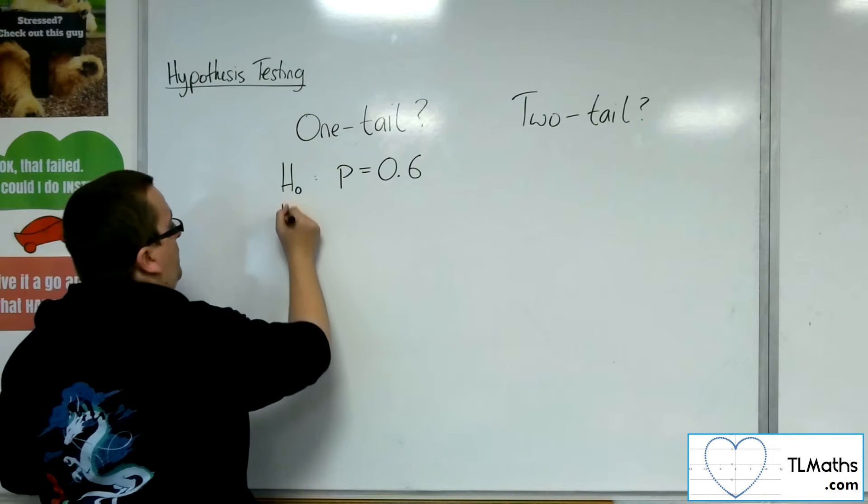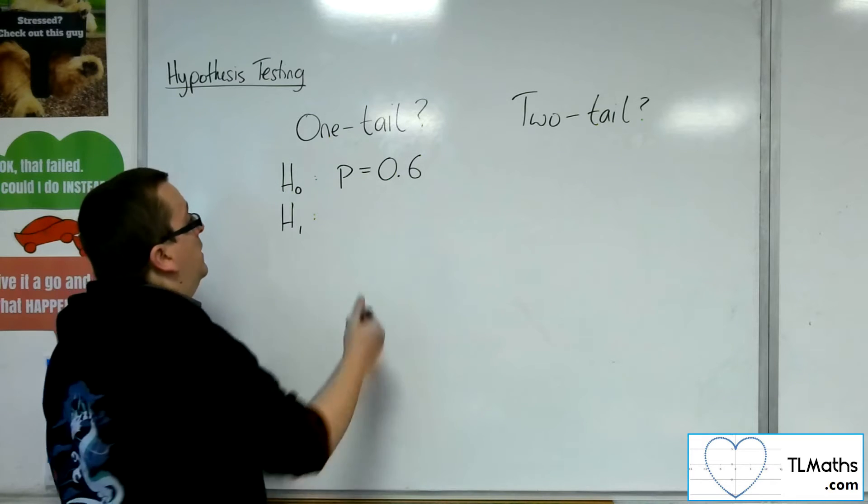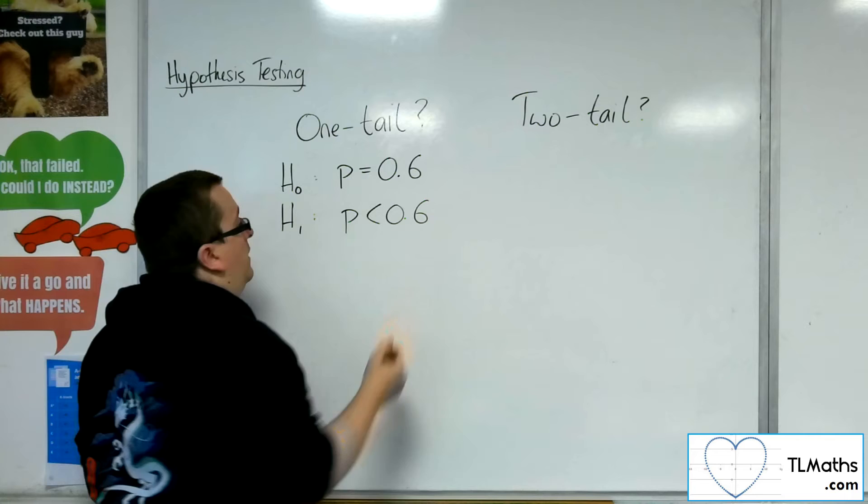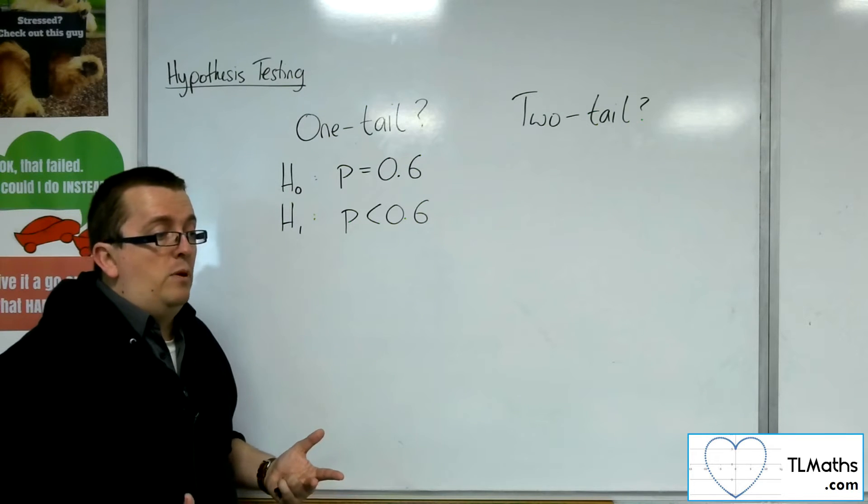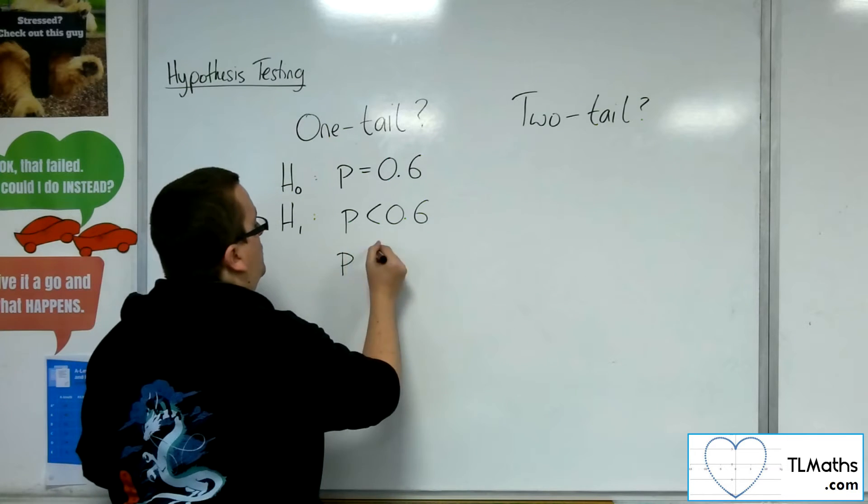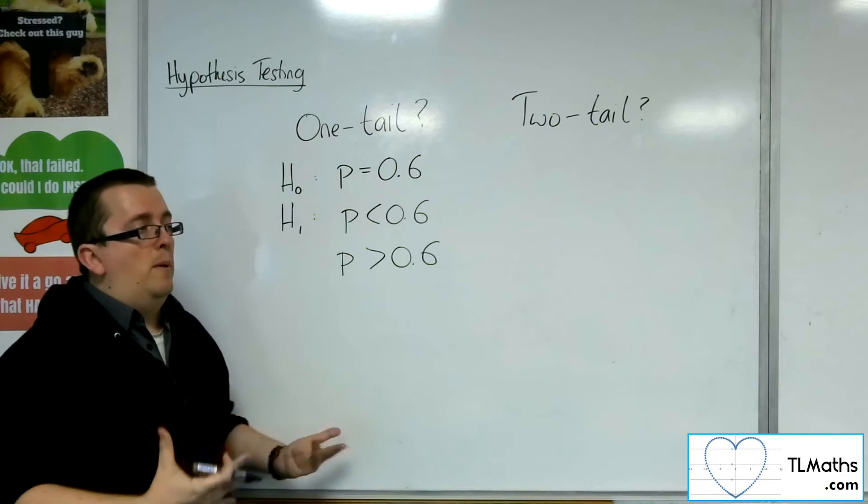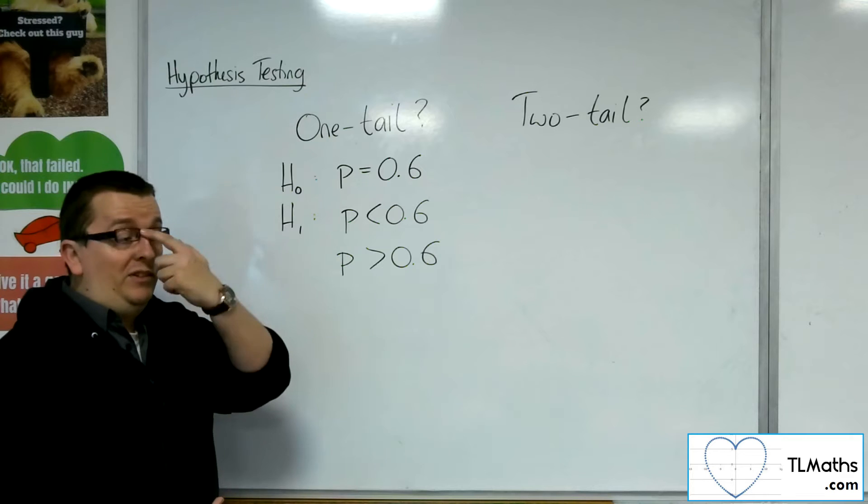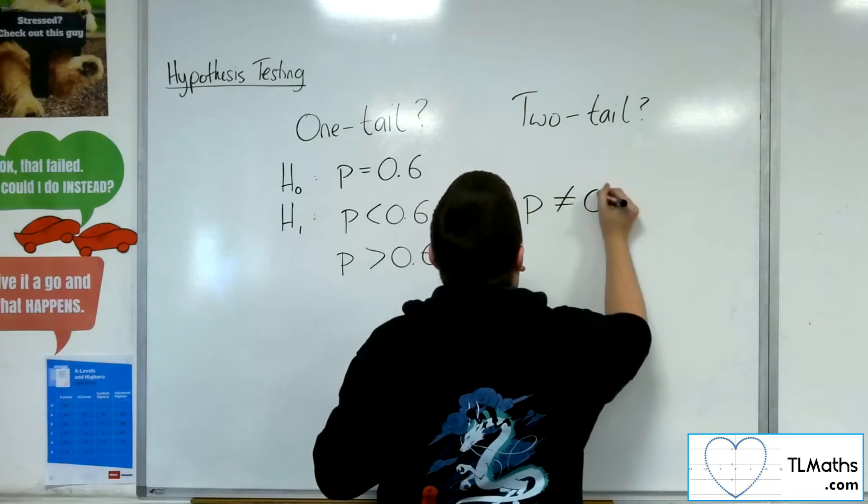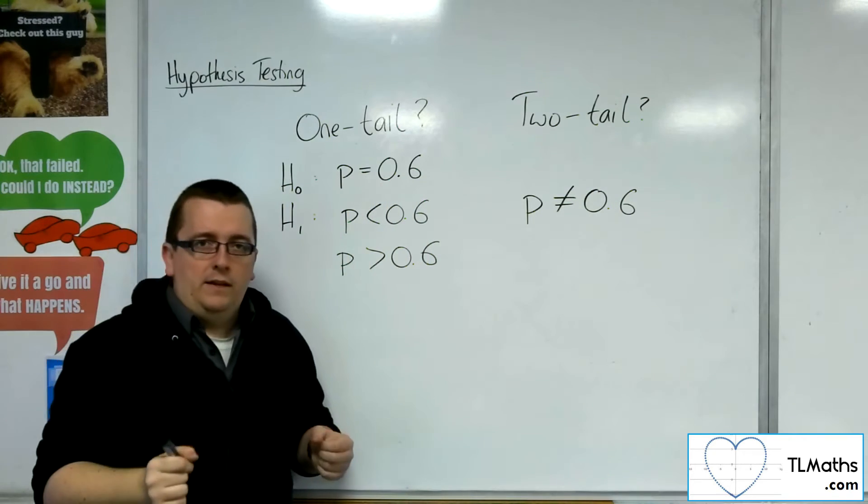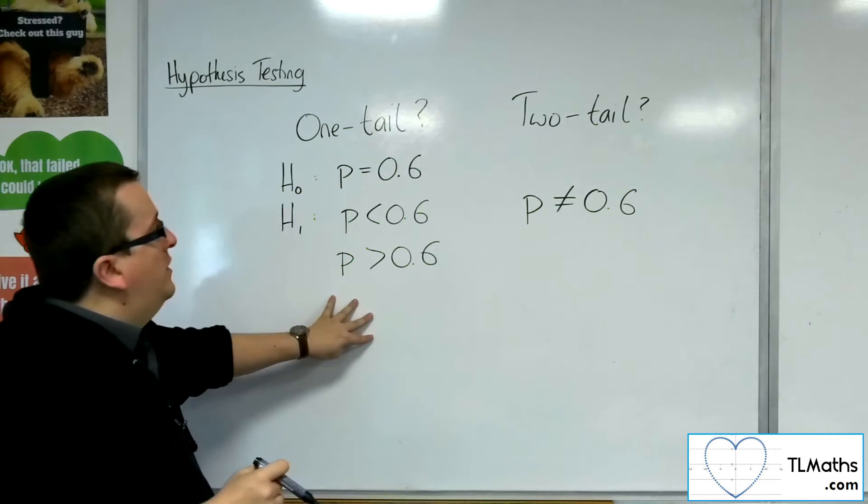Now, the alternative hypothesis may well be that we think that actually that probability has decreased. So we would look at an alternative where it's less than 0.6. Or we might think that the probability has actually increased, and so the probability is greater than 0.6. If instead we think the probability is different to 0.6, then we might write down probability is not equal to 0.6. Now, subsequently, what then happens is we now have to deal with a two-tail test rather than a one-tail.